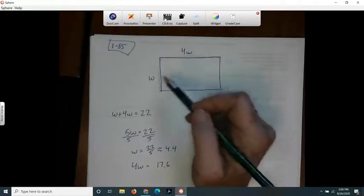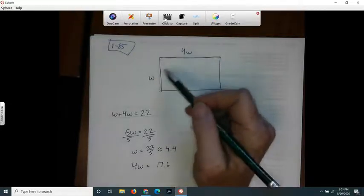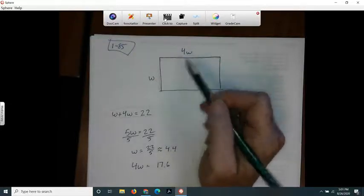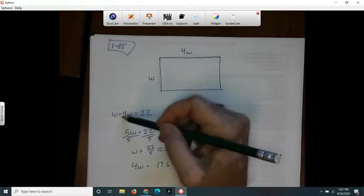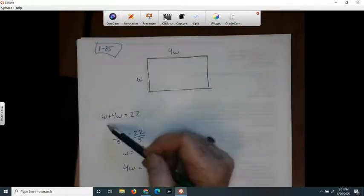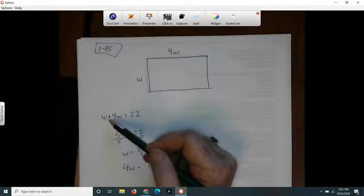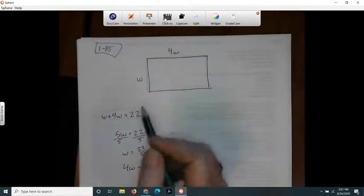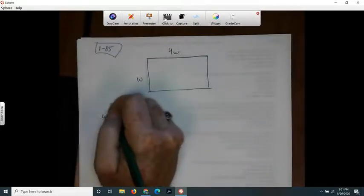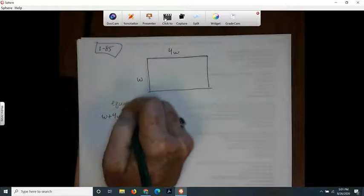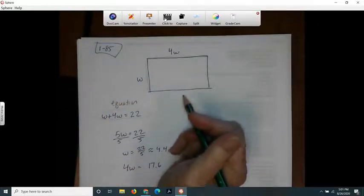Then they said that the sum of two adjacent sides was 22. Sum means add. So I just simply said W plus 4W is 22. So that's my one equation right there. It said write one or two. I'm just writing one.